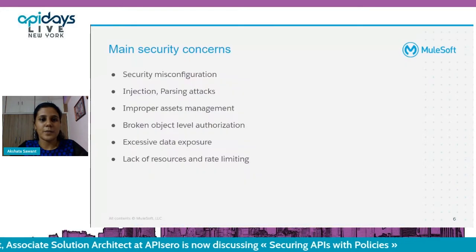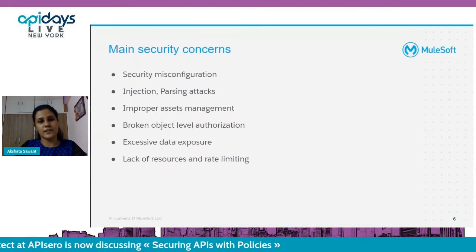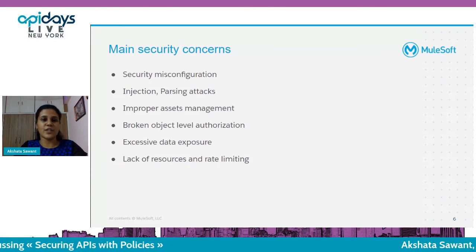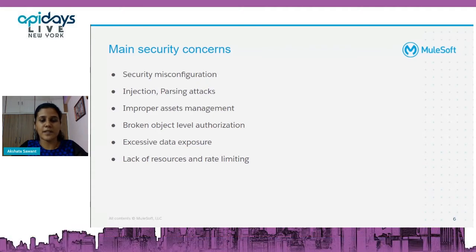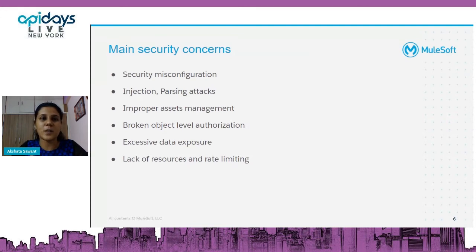What are the main security concerns? There could be security misconfiguration — some security threads that have been neglected. Or it could be an injection or parsing attack. We're aware of header injection and database-level injection, but APIs are exposed to front-ends and calling systems, so injections could be carrying malicious data. We need to ensure our APIs are protected from such attacks.